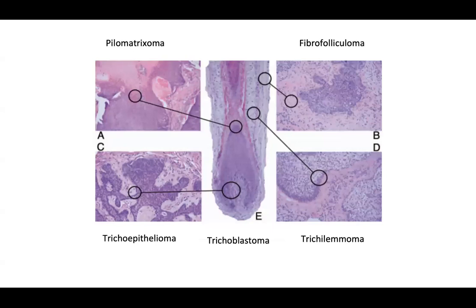This figure really summarizes how you can organize and compartmentalize adnexal tumors of follicular origin. Here you see a hair follicle. We start to get this transition from more of the matrical cells into the keratinized material — that's where you're going to see your pilomatrichoma develop. You'll have areas of basaloid appearance and areas of keratinization with the so-called ghost or shadow cells, which have empty white nuclear spaces surrounded by pink keratinized material.